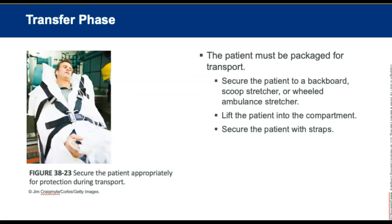The fifth phase is patient transfer. The patient must be secured for transport, including securing the patient to the backboard, scoop stretcher, or wheeled ambulance stretcher. Properly lift the patient into the patient compartment, secure with at least three straps to the body, and use deceleration or stopping straps over the patient's shoulders, especially if the patient is lying flat or secured to a backboard.